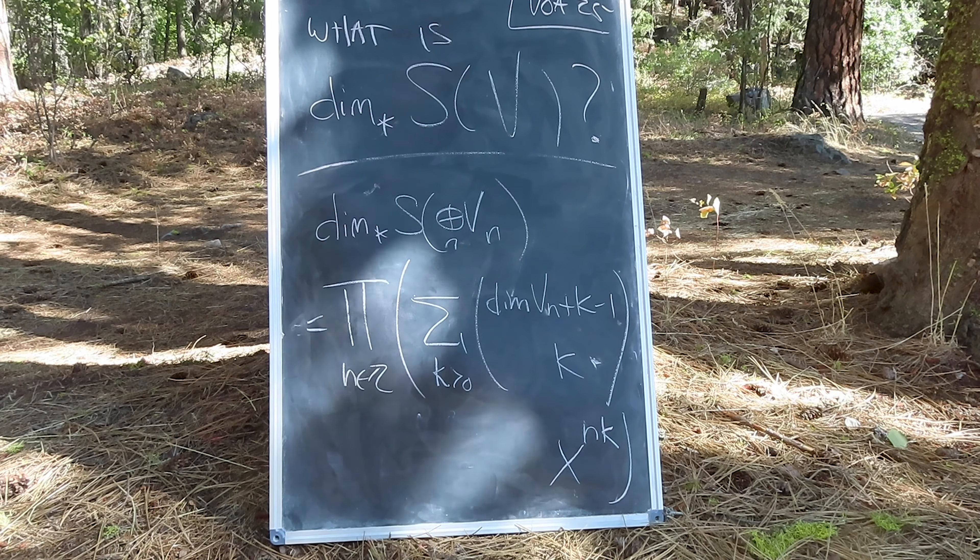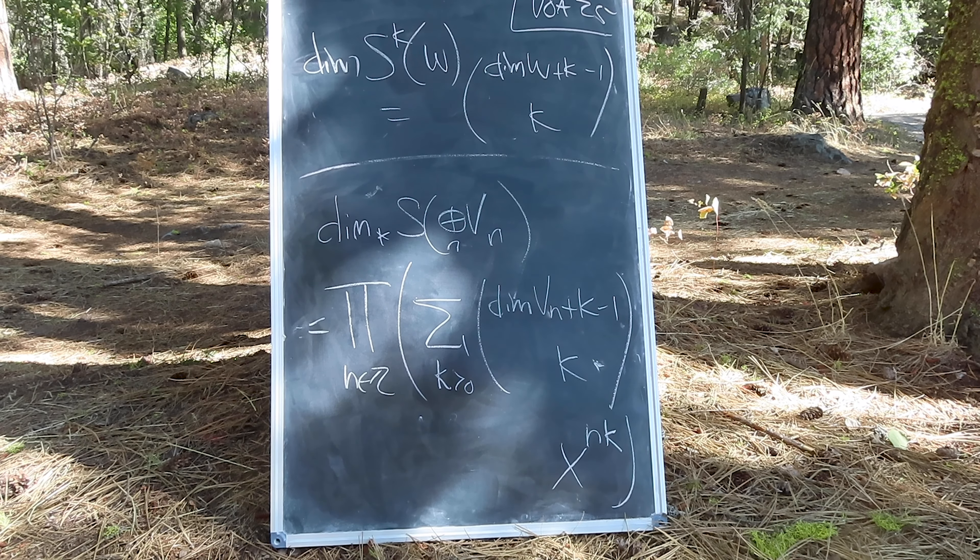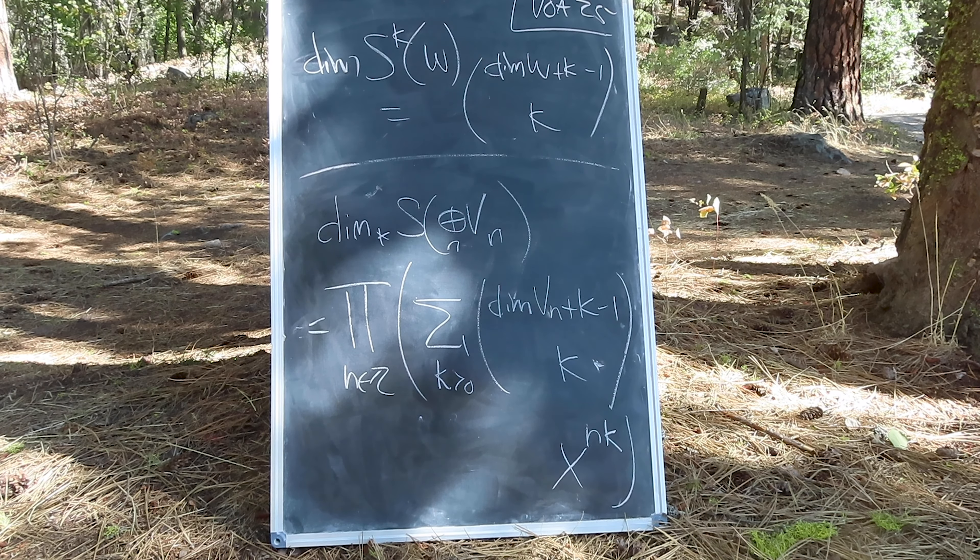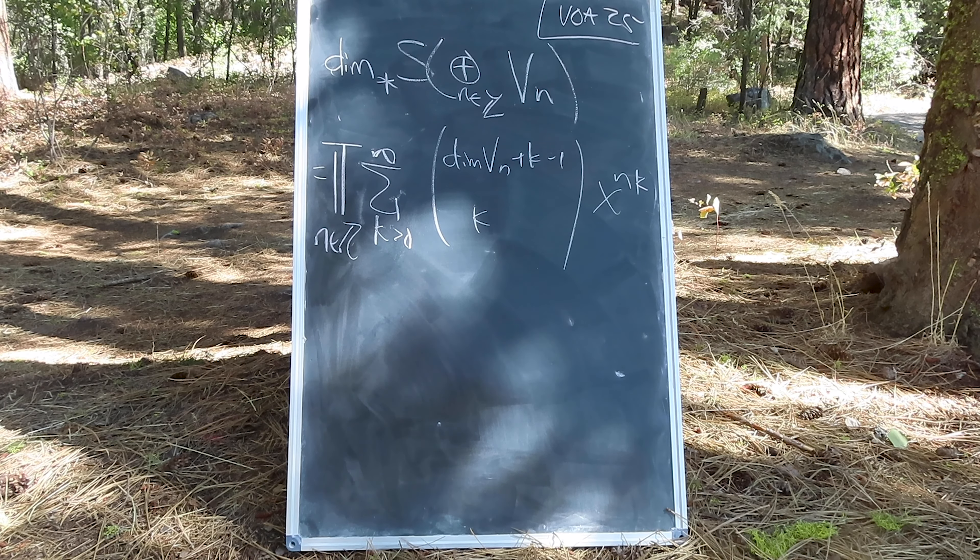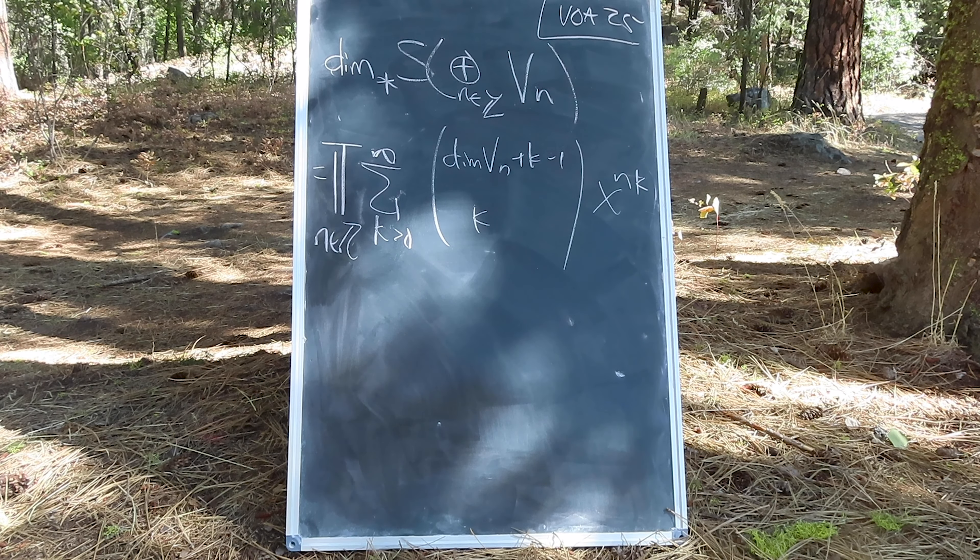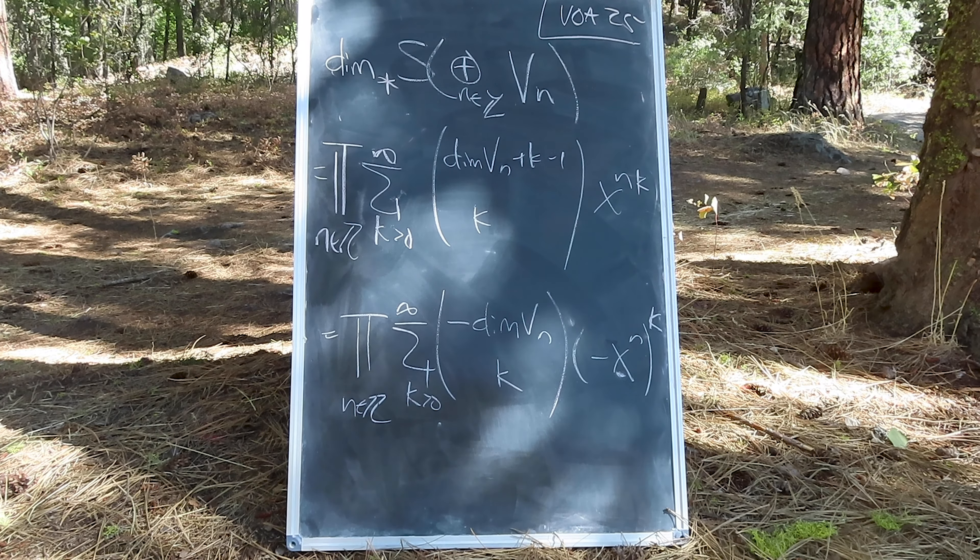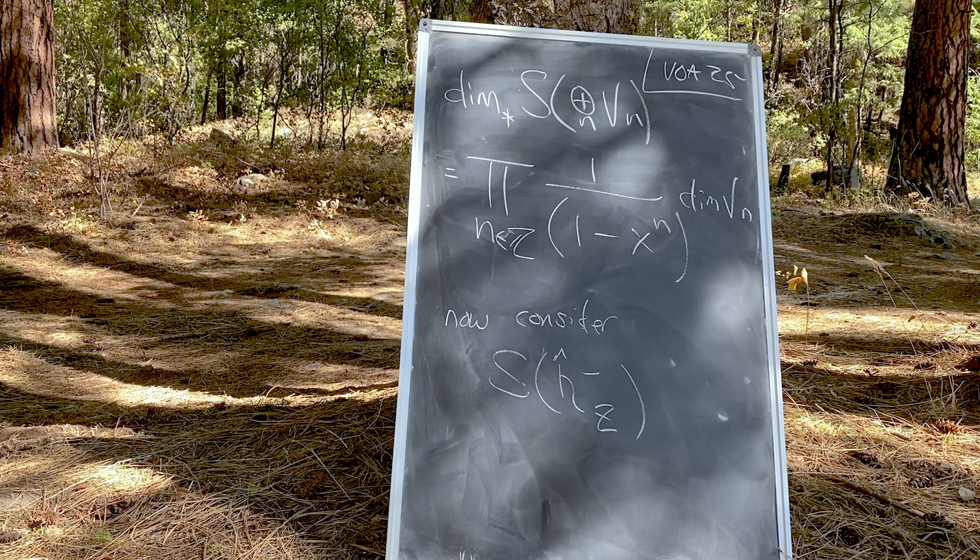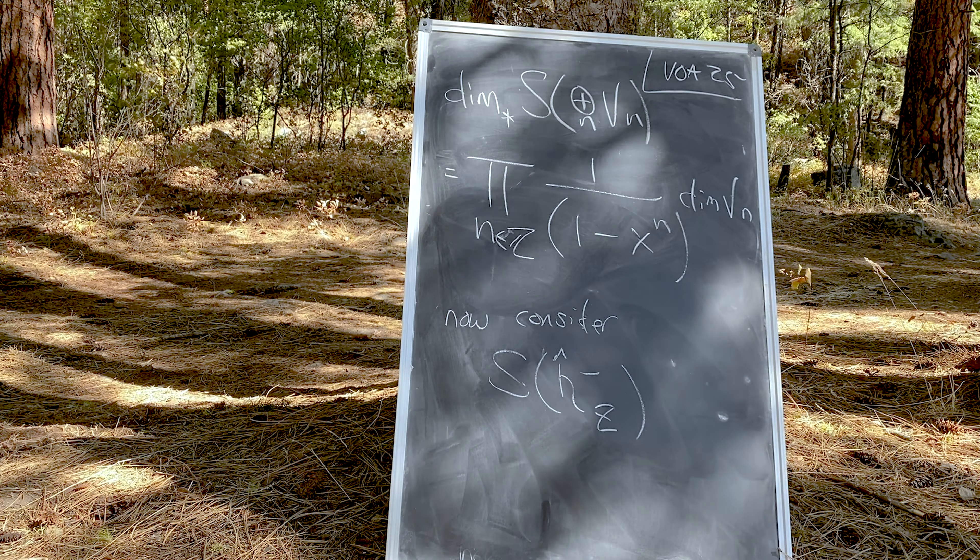The graded dimension of S is then the product over the positive integers of the infinite sums over positive K, the symmetric powers of V, of the dimensions of the individual subspaces. To better see this, notice that the dimension of the K-th symmetric power of some vector space W is the binomial factor dim W plus K minus 1 choose K. Put in terms of a product of binomial series, we can use the binomial identity to format the sum to something that might be more familiar.